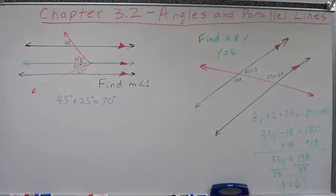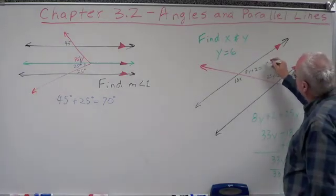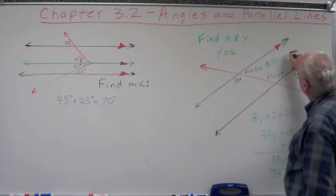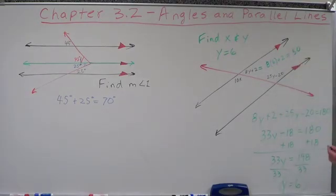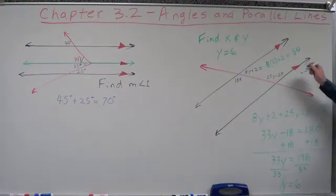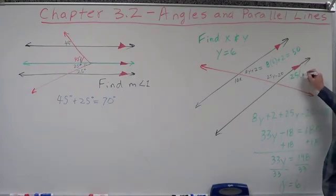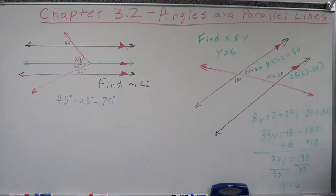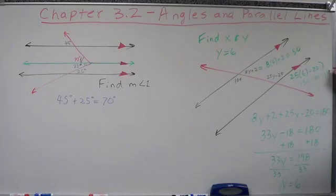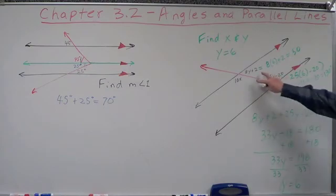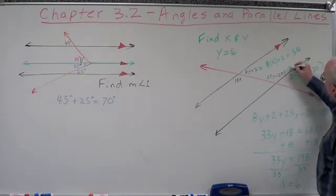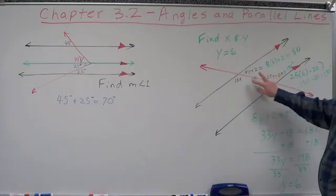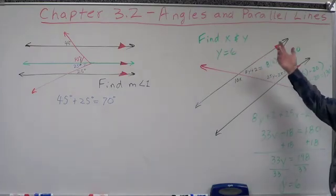We know what Y is, so we can plug it in. 8 times 6 plus 2 equals 48 plus 2, which is 50. And 25 times 6 minus 20: 25 times 6 is 150, minus 20 equals 130. Now which angle do we want to use? This one equals 130, though if we use the other one it's a linear pair and we'd need to do a bit more arithmetic.